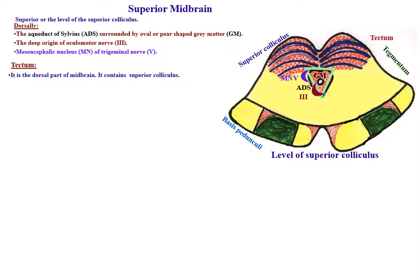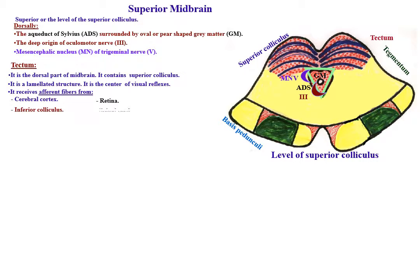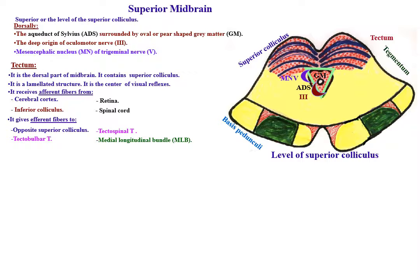The tectum contains the superior colliculus, which is a laminated structure and is the center of visual reflexes. It receives afferent fibers from the cerebral cortex, retina, inferior colliculus, and the spinal cord. It gives efferent fibers to the opposite superior colliculus, tectospinal tracts, tectopalpebral tracts, and the medial longitudinal bundle.